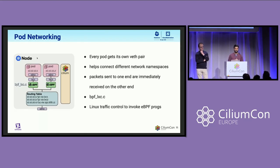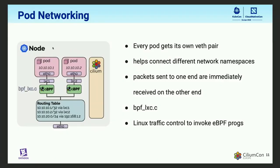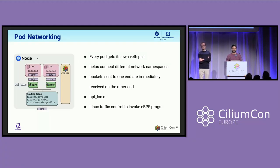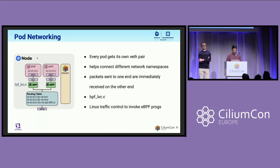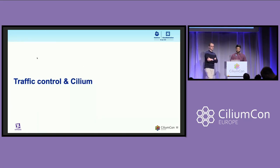A quick background of how Cilium in our clusters is set up: every pod created on a node gets its own virtual Ethernet pair and its own network namespace. The pod's network namespace is connected to the host network namespace using this VEth pair, and every packet sent on one end of a VEth pair gets transmitted immediately to the other end. Cilium also installs route table entries and IP rules to make sure packets can go in and out of the pod. Cilium also implements many features using eBPF, and one of the most important BPF programs is called BPF LXC, which has ingress and egress sections. Cilium uses traffic control to invoke these BPF programs on those interfaces.